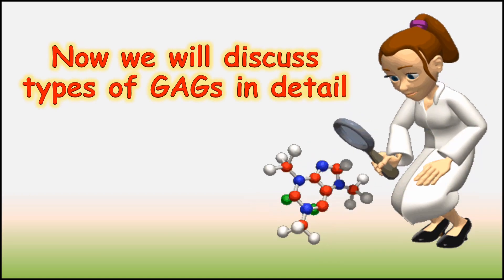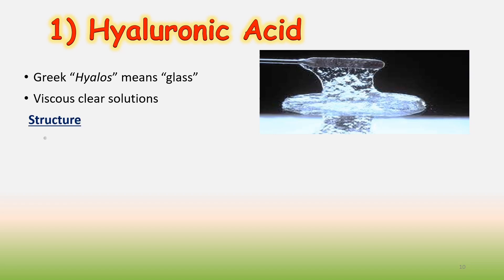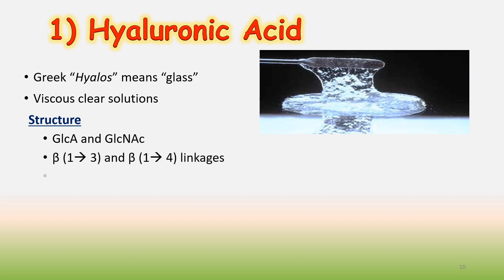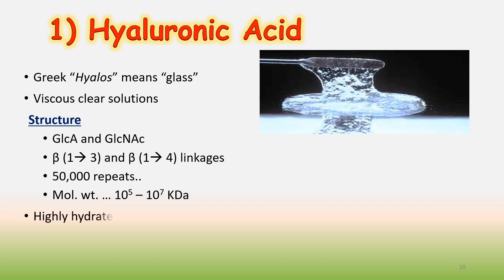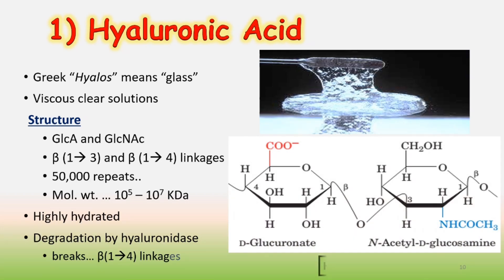Now we will discuss the types of GAGs in detail. The 1st one is hyaluronic acid. Hyalos is a Greek word which means glass. It is a viscous clear solution. Its structure is composed of glucuronic acid and N-acetylglucosamine. It has beta-1,3 and beta-1,4 linkages with up to 50,000 repeating disaccharide units. Its molecular weight is 10^5 to 10^7 kiloDaltons. It is highly hydrated. Degradation by hyaluronidases takes place by breaking beta-1,4 linkages.